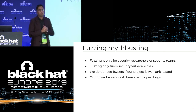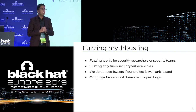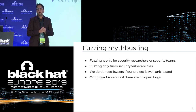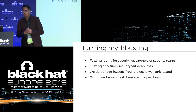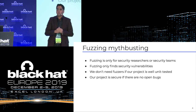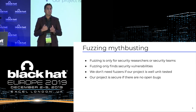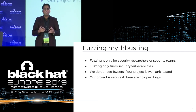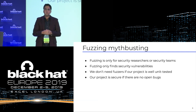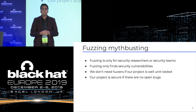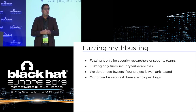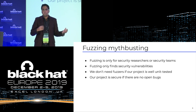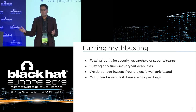So let's burst some myths first. One of the first things we hear quite a lot is that fuzzing is only for security researchers or security teams. This is not really true — we have worked with hundreds of developers, and they enjoy fuzzing if it's seamlessly integrated in their workflows. The second myth is that fuzzing only finds security vulnerabilities. This is also not true: fuzzing has been used to find very critical stability vulnerabilities as well, like those pesky null pointer dereferences.